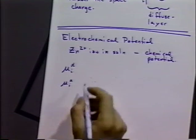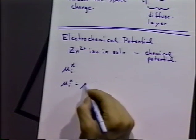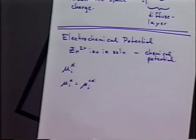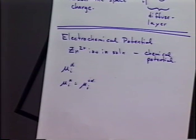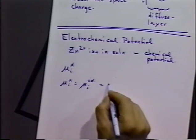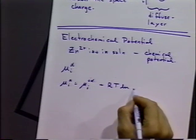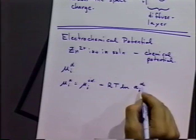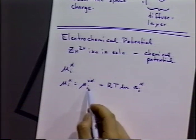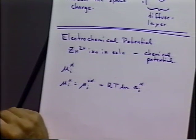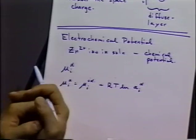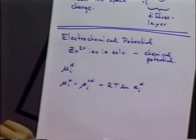Mu sub i in phase alpha is equal to the standard chemical potential — the chemical potential of that species at its standard state under standard temperature and pressure — plus RT ln of the activity of species I in phase alpha. So the chemical potential of any particular species is the standard potential plus a term that depends on the activity of that species in solution. The more concentrated that species is, the higher the activity typically will be, and the chemical potential will rise accordingly.